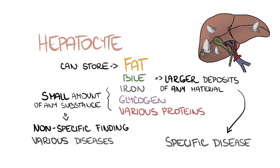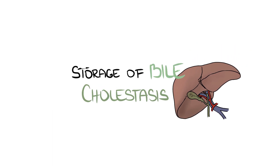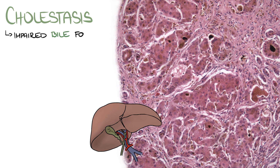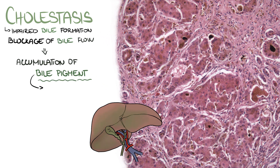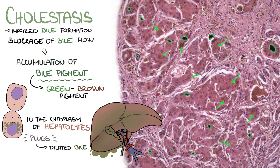In this video, we will discuss storage of bile, which is called cholestasis. Cholestasis is caused by impaired bile formation or blockage of bile flow, giving rise to accumulation of bile pigment in the hepatic parenchyma. Bile is apparent as a green-brown pigment in the cytoplasm of hepatocytes, or as plugs in dilated bile canaliculi.